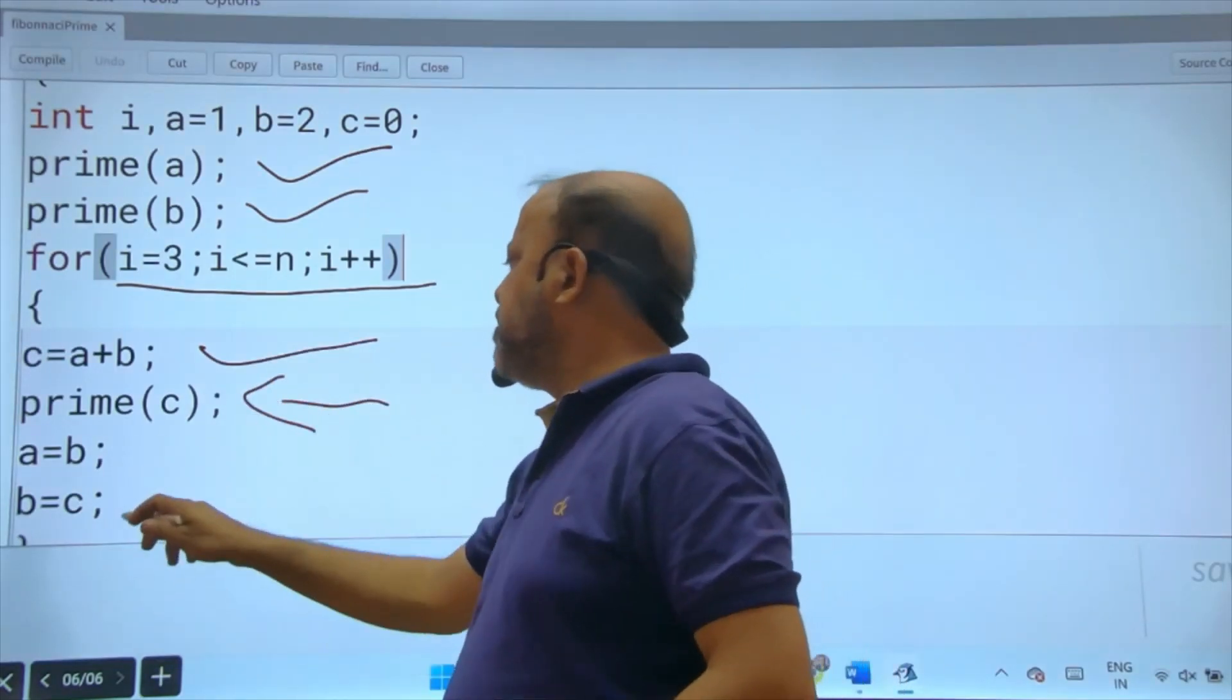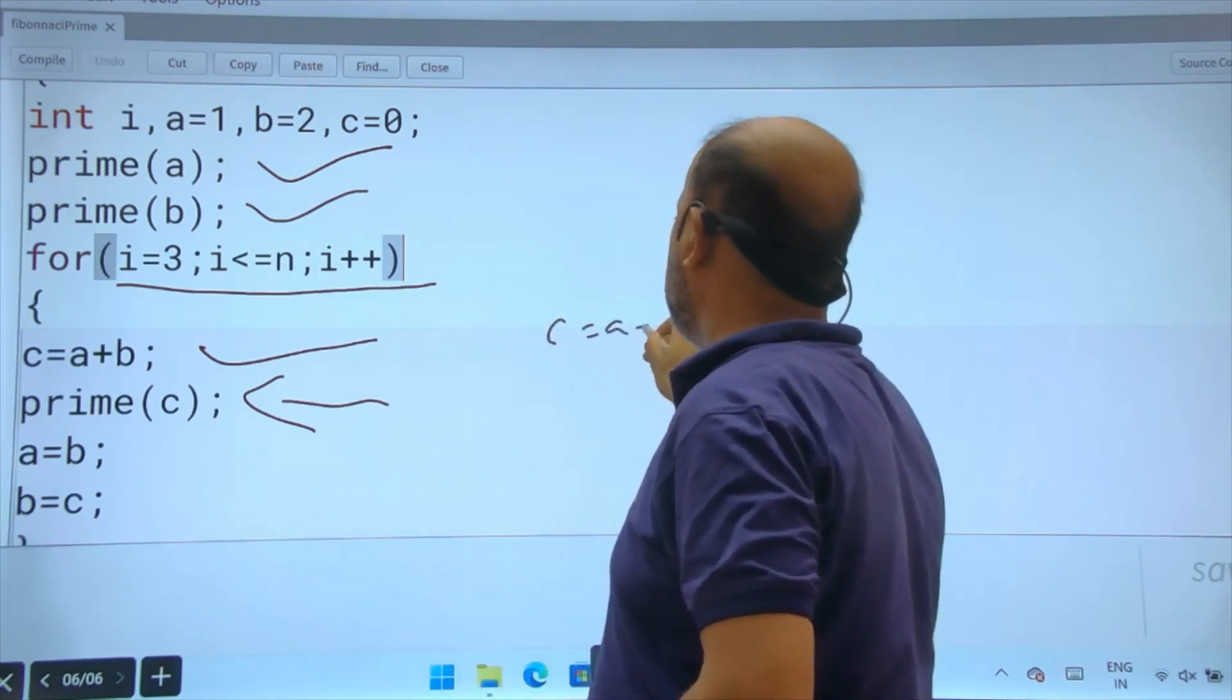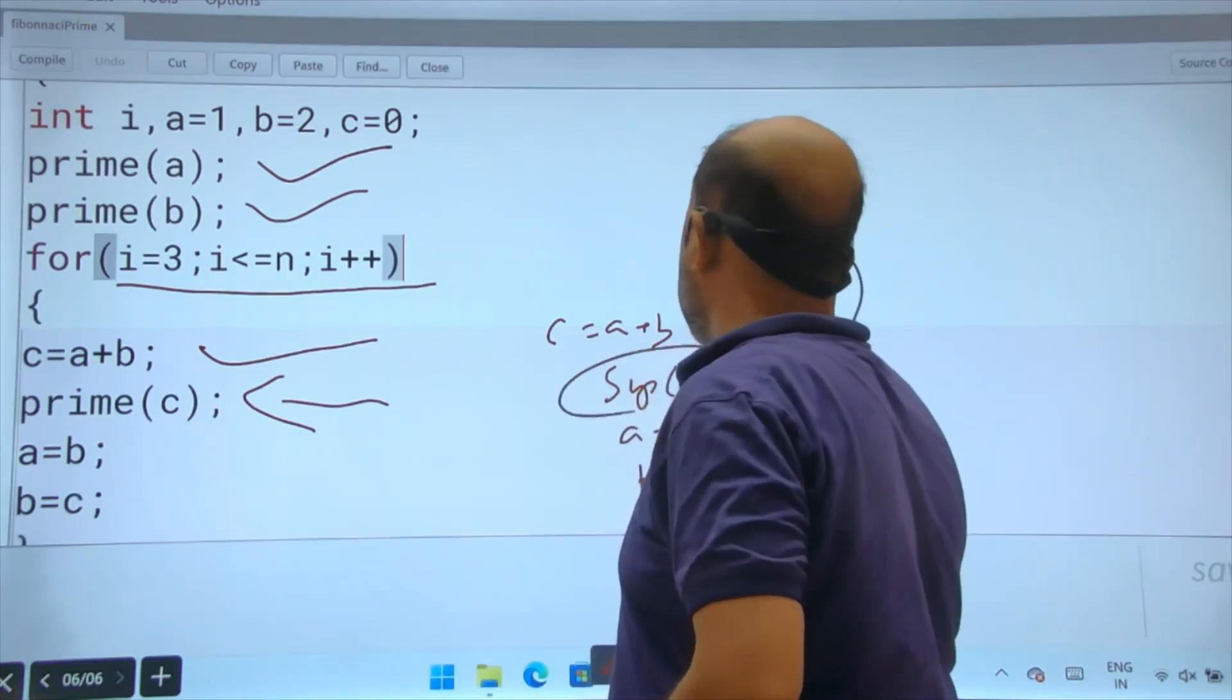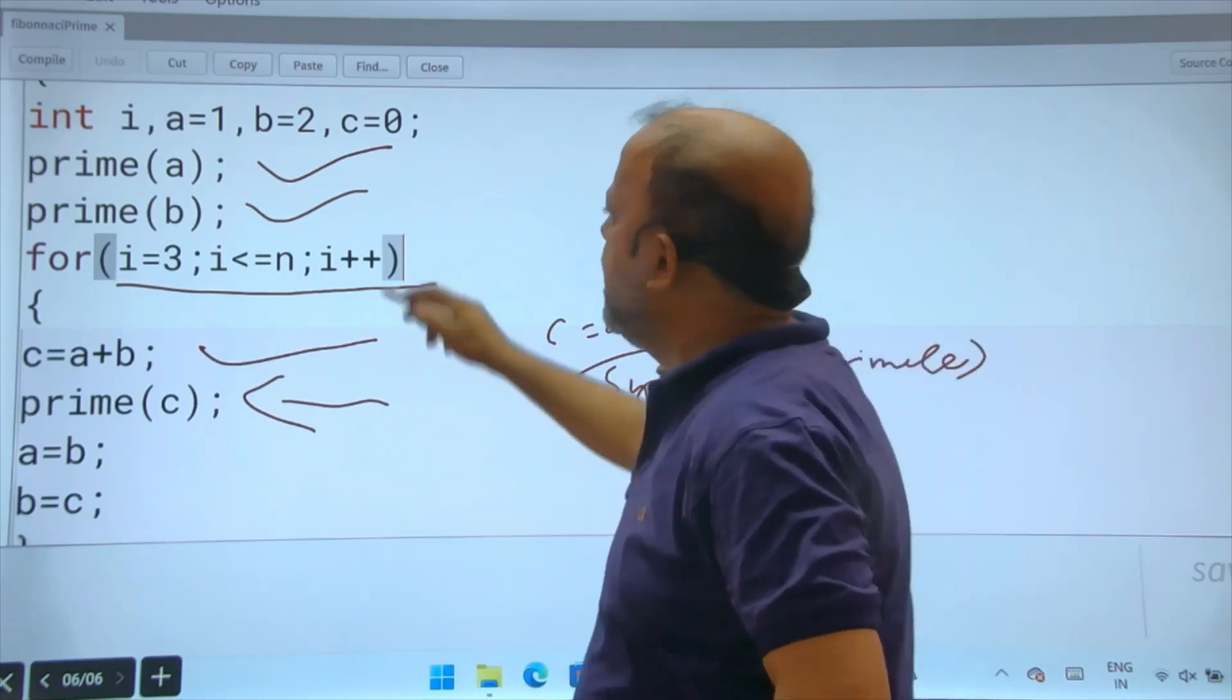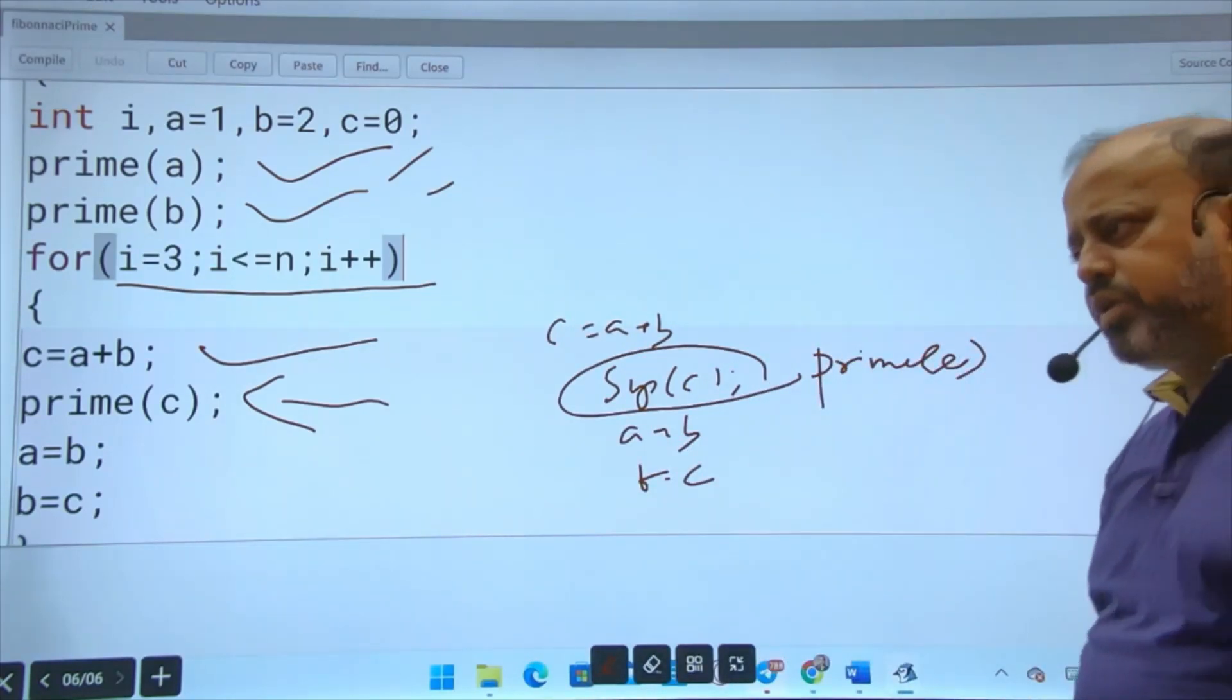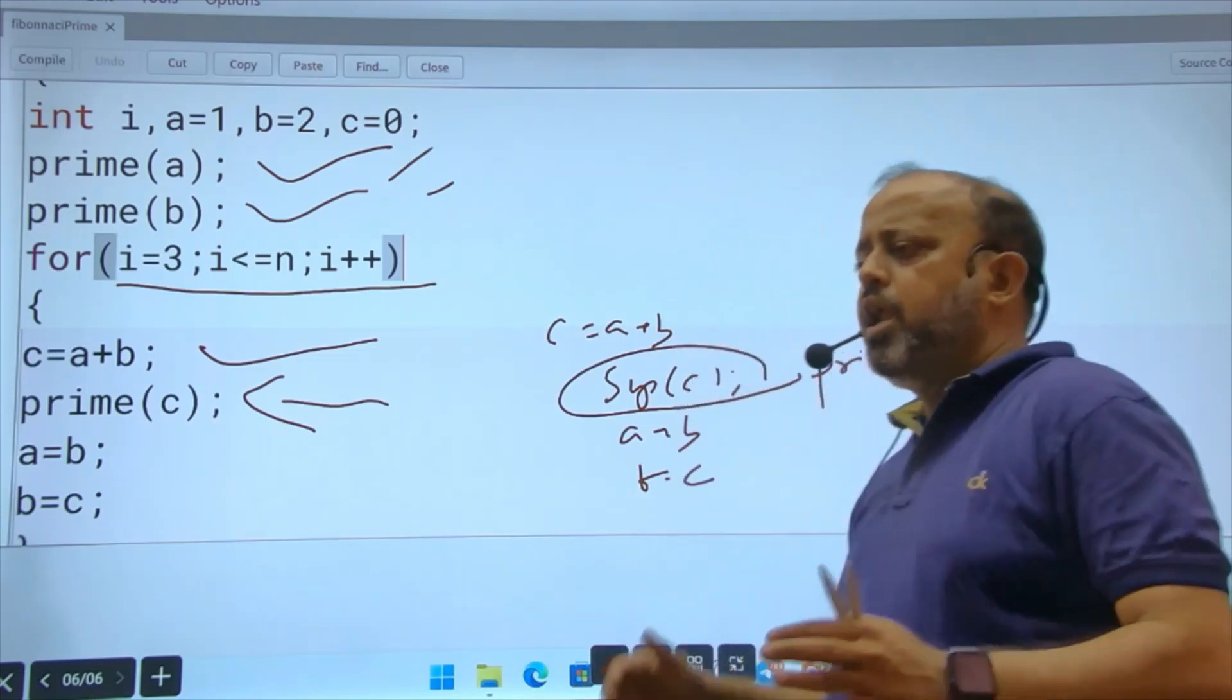Printing, after that what was done? Prime c, a becomes b, b becomes c. In Fibonacci, Fibonacci's line is c equals to a plus b. Normally you do sop c, a ko b banate ho, b ko c banate ho. What I changed in this - of sop, I used prime c. I called my function. Here two times called. One function how many times called? Three times called. This is the advantage of function. Okay, so today is the last program. Okay, next class I will be doing return type.